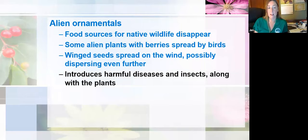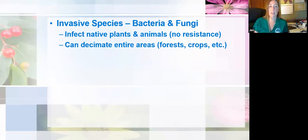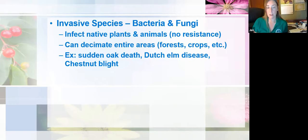We see a lot of invasive bacteria and fungi coming in on plants that are brought here. That's a lot harder to detect, so they can infect our native plants and animals, which of course have no resistance to them, and can very quickly decimate entire large areas. We're going to look at some examples of invasive fungi that are brought here mostly on exotic plants.